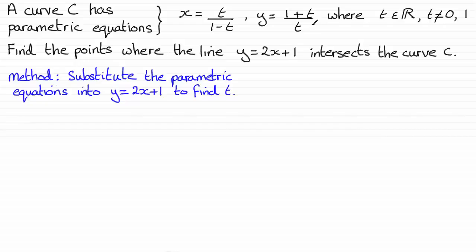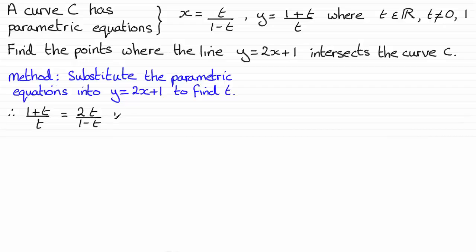So we substitute our x and y values into y equals 2x plus 1. Doing that, the next line is therefore: 1 plus t all divided by t, for y, equals 2 times x, which is 2 times t over 1 minus t, giving 2t all over 1 minus t, plus 1.